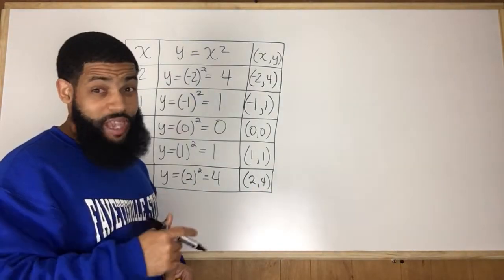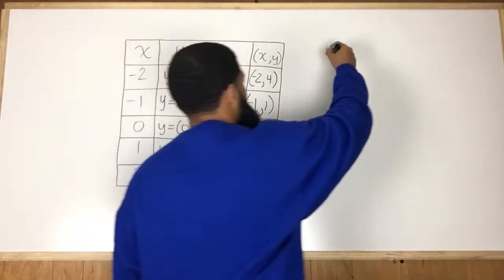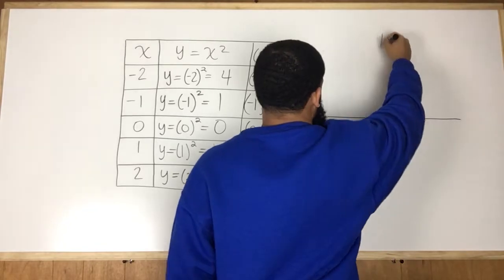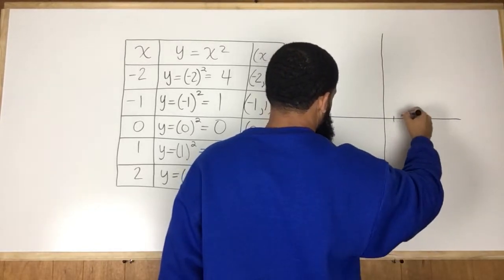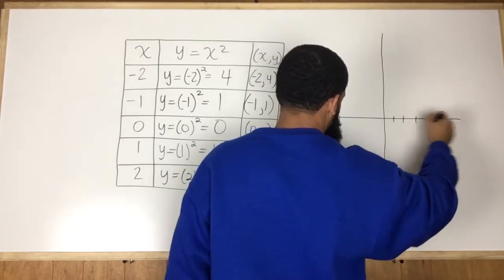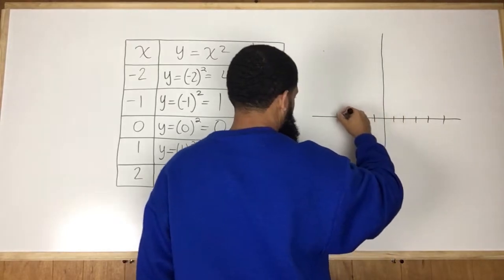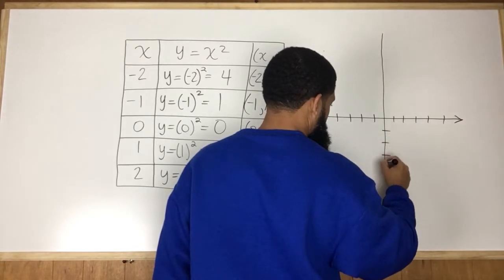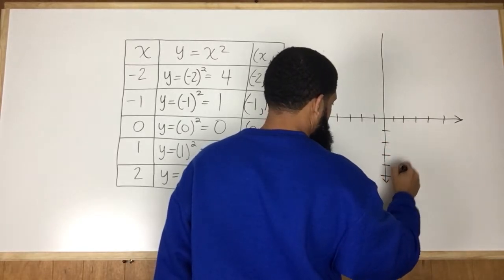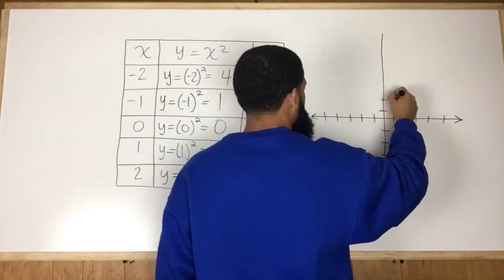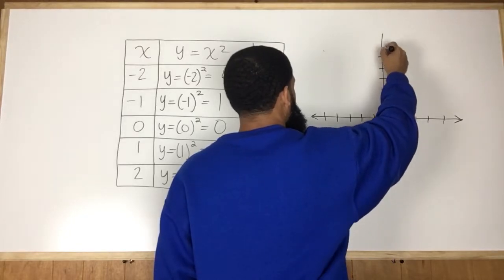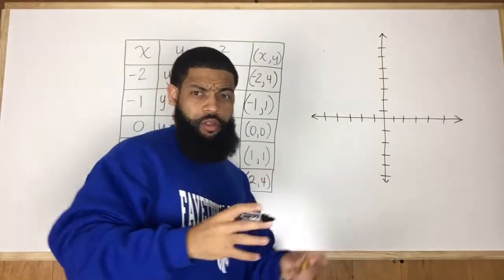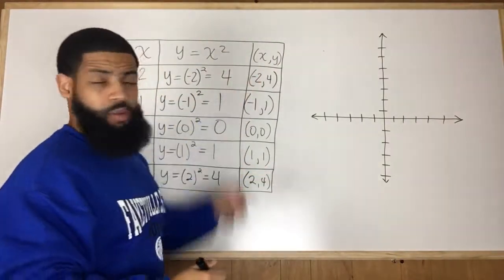So what you have is what's going to look like this. If I graph this on the coordinate plane, which we won't even need those negative values. And for the sake of time, I won't label all the numbers and things like that. But I have the ordered pair,